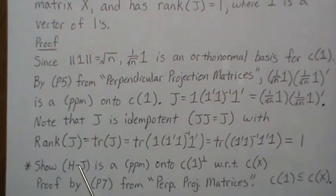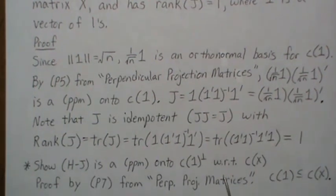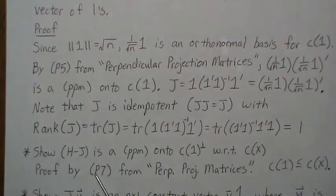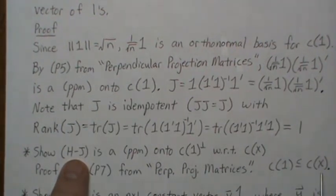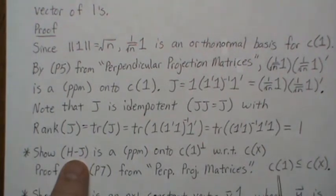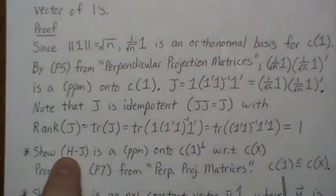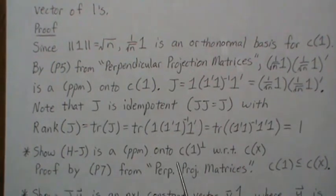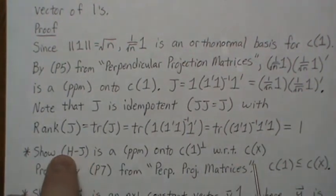Now let's show that H minus J is a perpendicular projection matrix onto the orthogonal complement of the column space of 1 with respect to X. This follows by property 7 of perpendicular projection matrices, and holds because the column space of 1 is a subset of the column space of X — the first column of the design matrix is all ones. Since J projects onto the column space of 1 and H projects onto the column space of X, H minus J projects onto the orthogonal complement of the column space of 1 within X.